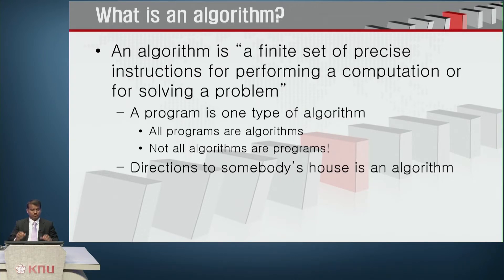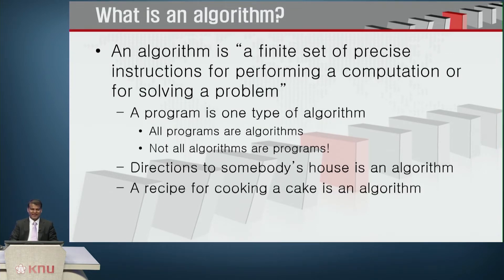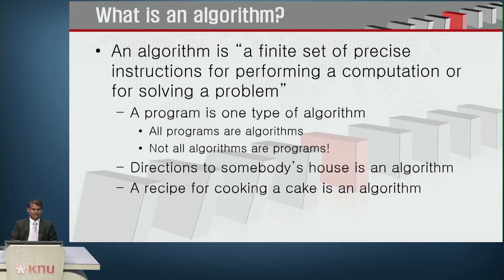That is the same thing we try to write as a program and feed to the computer to perform a specific task. Similarly, a recipe for cooking a cake is an algorithm — take the tomato, boil it, peel its skin, stir the tomatoes, add salt, add pepper or chili sauce, and after 5 minutes you are done. All these specific instructions together form an algorithm, and if you follow them, your goal is achieved.